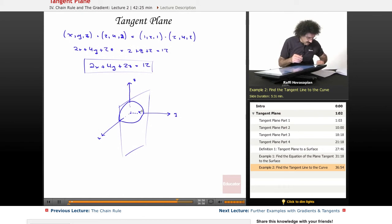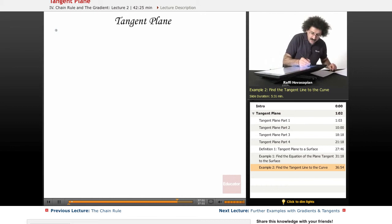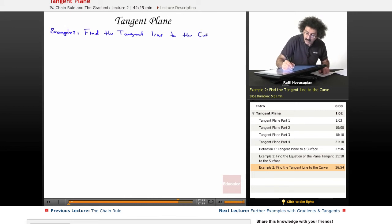So let's go ahead and do another example here, and we'll finish off with this one. This is example number two. This time, we want to find the tangent line to the curve xy² + x³ = 10 at the point (1,2).